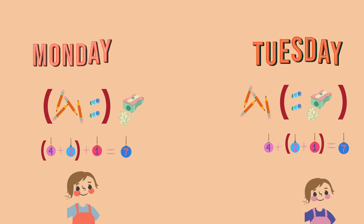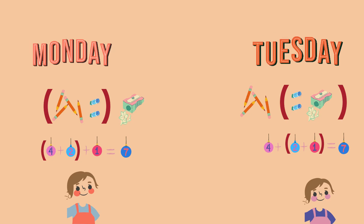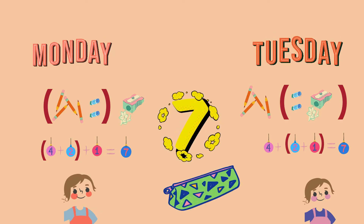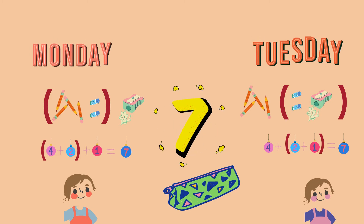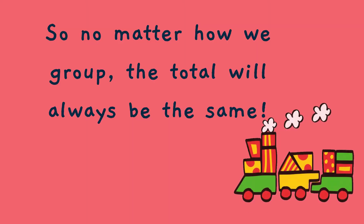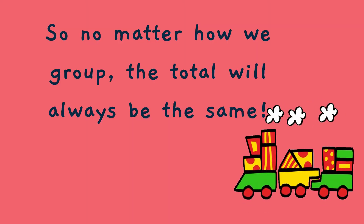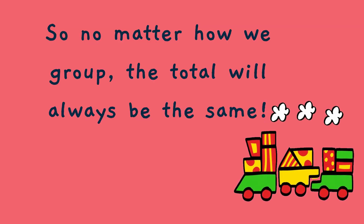So on Monday, he put the pencils and erasers first and then the sharpener. And on Tuesday, he put the eraser and sharpener first and then the pencils. But on both the days, he had seven items in his pouch. So no matter how we group, the total will always be the same.